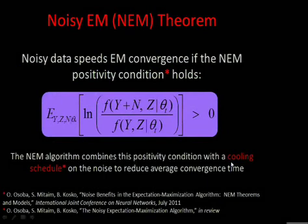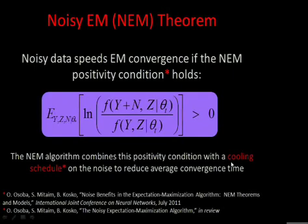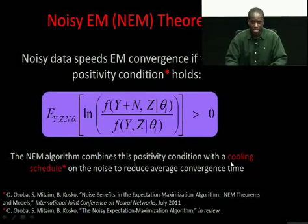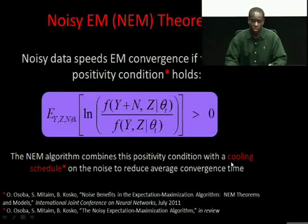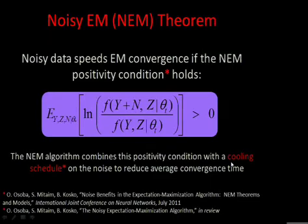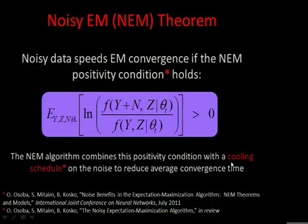We found a way to augment the EM algorithm with noise to make it faster. I derived a condition showing that if you satisfy this condition, your EM algorithm converges faster. However, the EM algorithm is also a learning algorithm, so the injected noise has to cool down, because the learning system cannot converge to a stable maximum unless the learning rate reduces to zero. The combination of the noise condition and the cooling schedule forms the noisy EM algorithm.